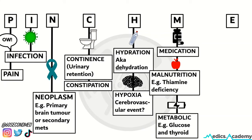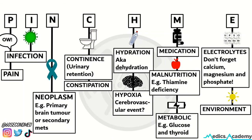M is for medication — it could be a new drug or a drug interaction. Also malnutrition; for example, a thiamine deficiency leading to Wernicke's encephalopathy. And also metabolic, thinking about glucose and thyroid levels.